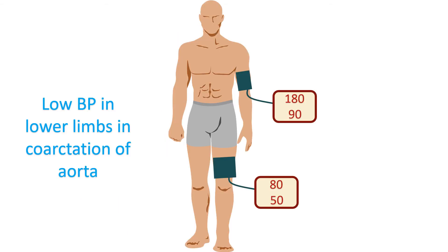The simplest way of detecting coarctation of aorta is by checking the pulses in the groin and comparing them with those in the arm. The difference in pulse volume can be documented better by recording the blood pressure in the upper and lower limbs. The lower limb blood pressure is usually higher in normal individuals, but in coarctation of aorta it is significantly lower than in the upper limbs. This is one of the reasons why it is taught that in the initial examination of high blood pressure, blood pressure in the lower limbs should be checked.